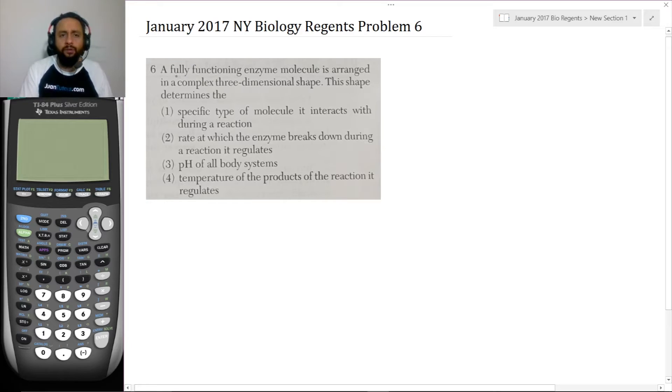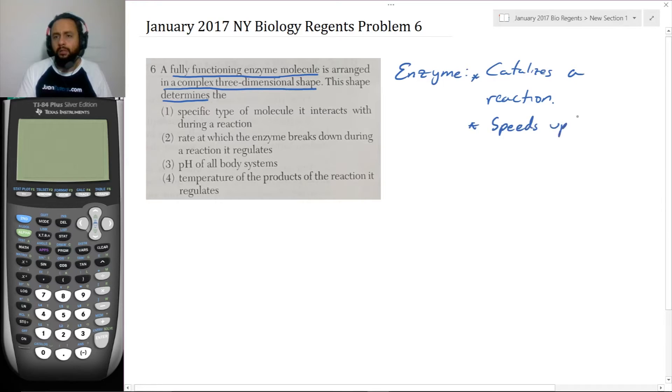Okay, so this is a fully functioning enzyme arranged in a complex three-dimensional shape. This shape determines what? Let's see - we need to know what an enzyme does. An enzyme catalyzes a reaction. What do we mean by catalyzes? It speeds the reaction up, speeds up the rate of reaction.